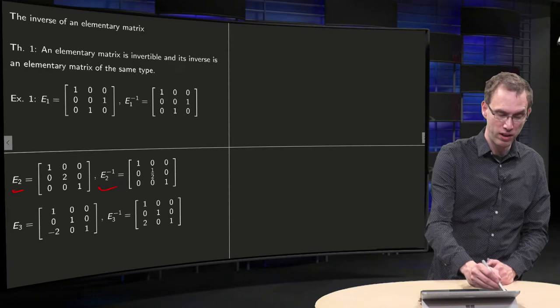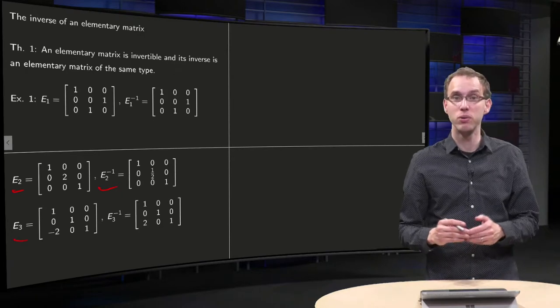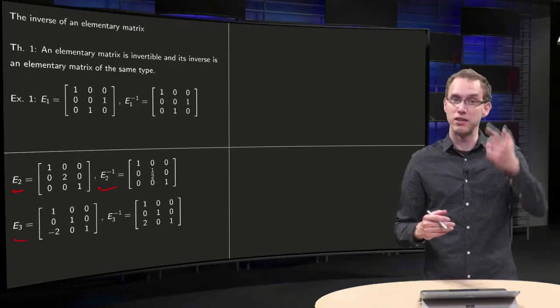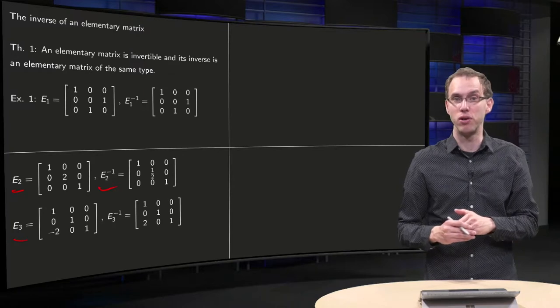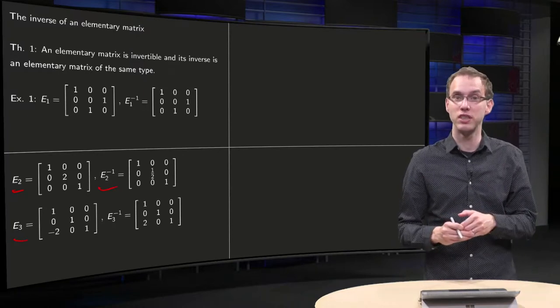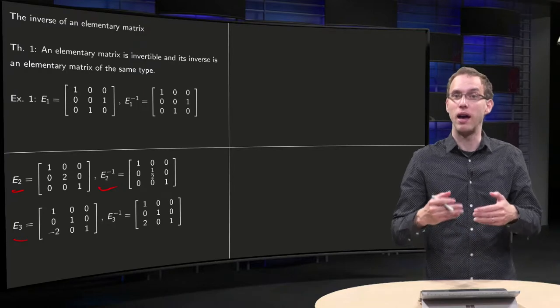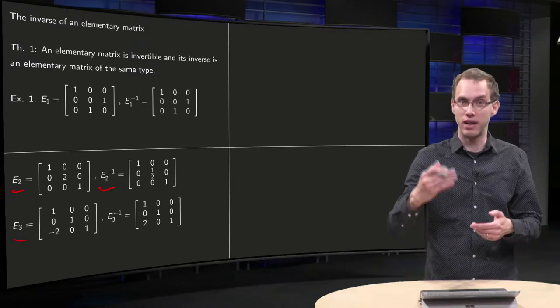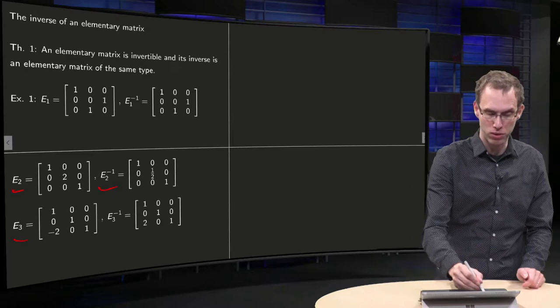Something similar for E3. So what does E3 do? In this case, you add minus two times the first row to the last row. How do you undo that operation? Well, by adding again, but now two times the first row to the last row.